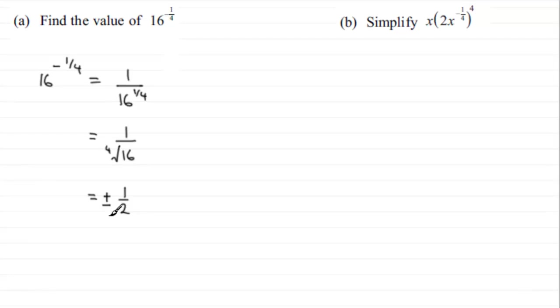All right so that's part a. Now in part b we've got to simplify x multiplied by 2x to the power minus a quarter all to the power 4. So if you're doing this one then we'll just leave the x there.